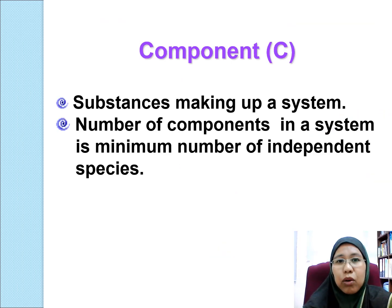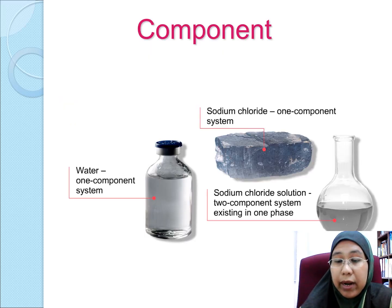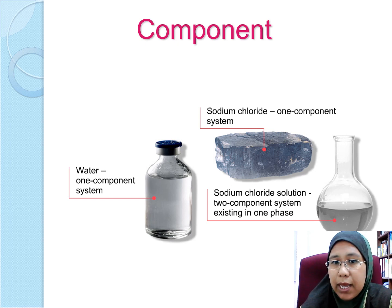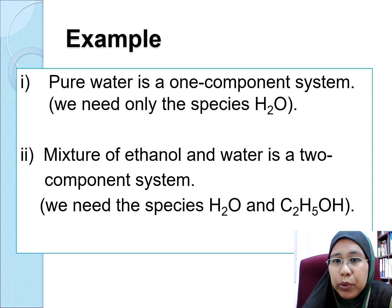Components are substances that make up a system. The number of components in a system is the minimum number of independent species. For example, sodium chloride solid is a one-component system. Water is a one-component system. But when we dilute sodium chloride in water, it becomes a two-component system existing in one phase. The mixture of ethanol and water is also a two-component system because we have two species — water and ethanol.